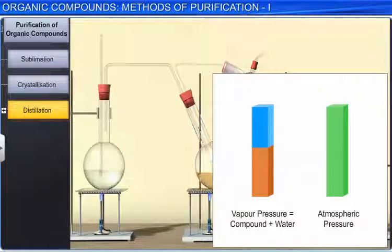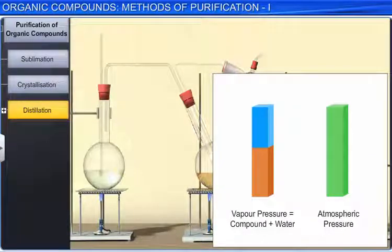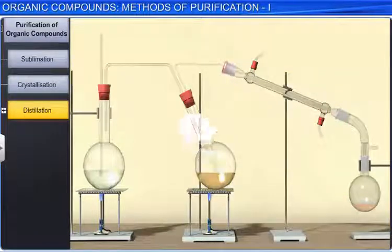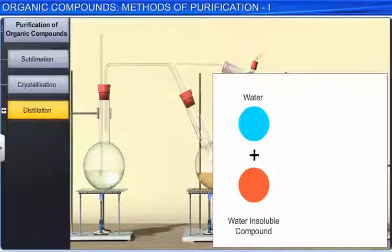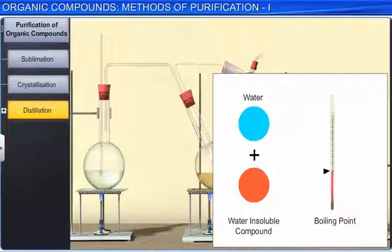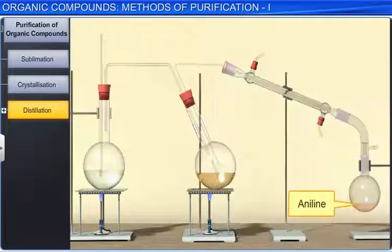Since the vapor pressure of the organic liquid is lower than the atmospheric pressure, the organic liquid vaporizes at a lower temperature than its boiling point. Hence, if one of the substances in the mixture is water and the other is a water-insoluble but steam-volatile substance, then the mixture will boil close to but below 373 Kelvin. Aniline is separated by this technique from an aniline-water mixture.